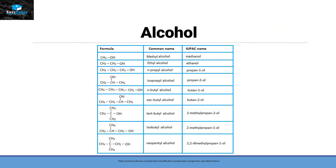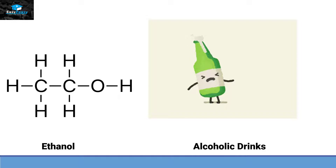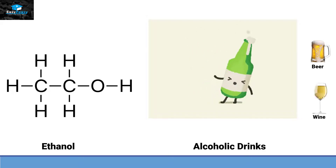Now alcohol is a really big family. A compound becomes an alcohol because it attaches itself with an OH group. So if this OH attaches to methane it becomes methanol; if it attaches to ethane it becomes ethanol; propane becomes propanol, and so on. Out of all these types of alcohols, the two-carbon alcohol — ethanol — is also present in alcoholic drinks, for example beer or wine.